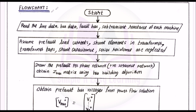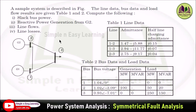The flowchart starts with the first step: read the line data, bus data, the bus at which the fault occurred, and the sub-transient reactance of each machine connected to the system. The line data consists of line admittance and line charging admittances. Bus data consists of bus voltages and power ratings.